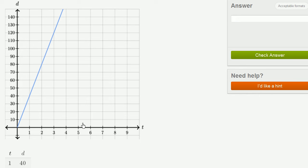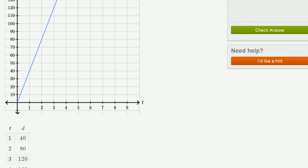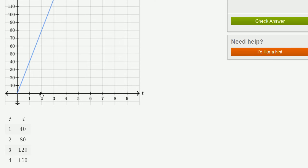We have this graph with t as the independent variable on the horizontal axis and d as the dependent variable on the vertical axis. And then they have a table here. This table corresponds to this graph. When t equals 1, d is 40. When t equals 2, d is 80. So these points correspond to points on this line.